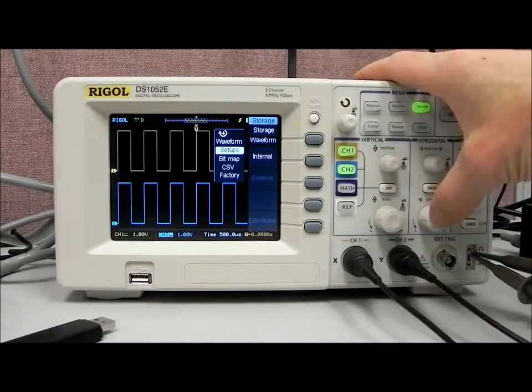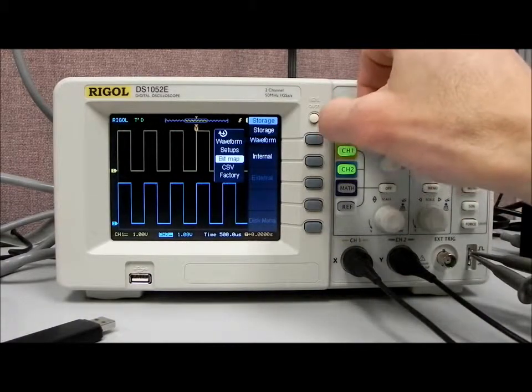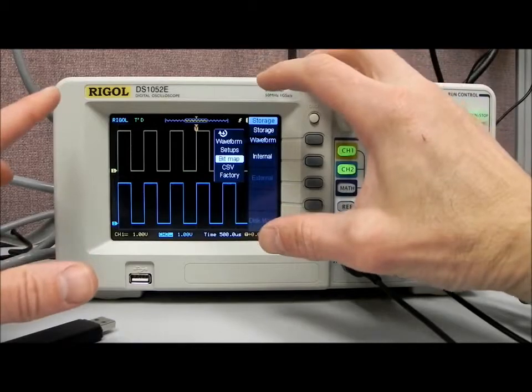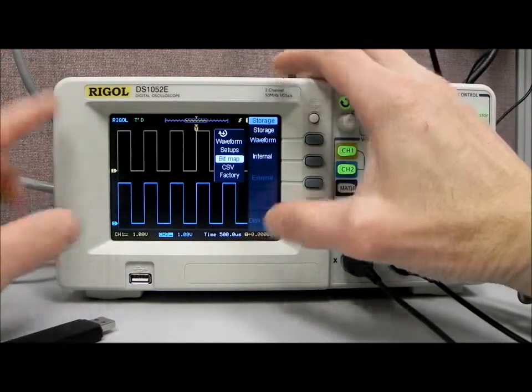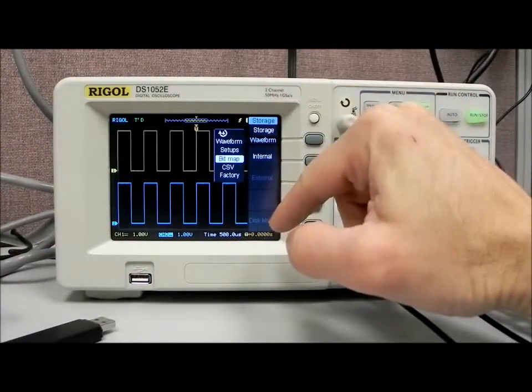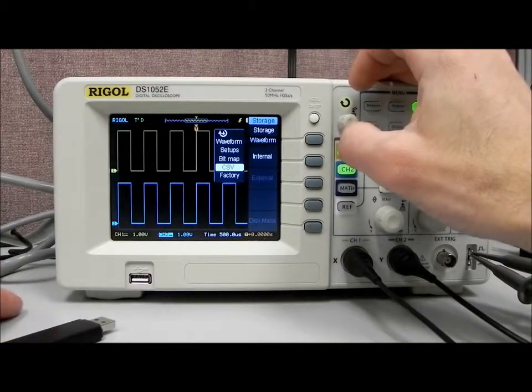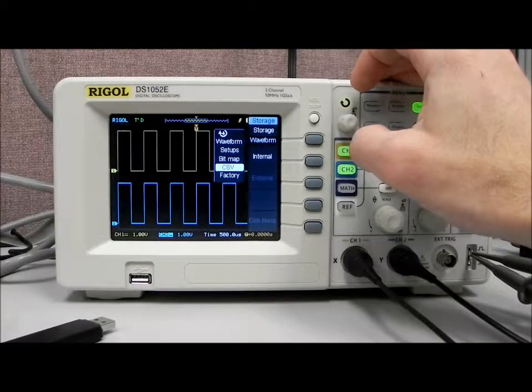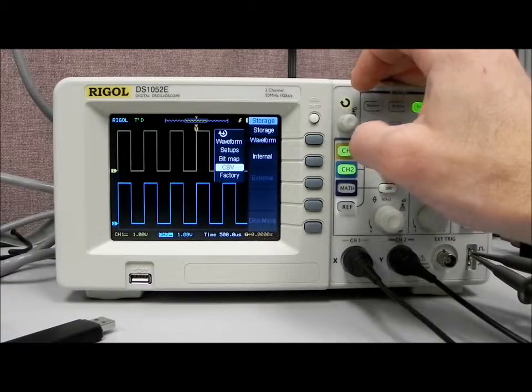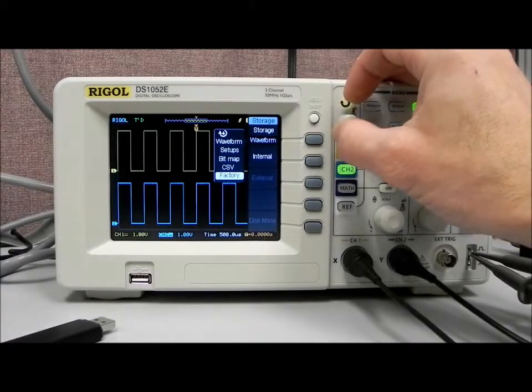Bitmap is going to be a screenshot of the display, so it's going to have all of the information that's displayed, including the menu if we wanted that information. CSV is going to be comma delimited so we could use that in Excel or other spreadsheet file in order to do graphing and other analysis. And again, factory is going to return us back to factory defaults.